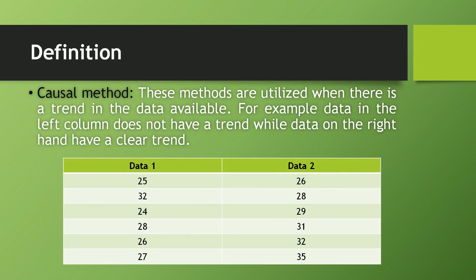Definition. These methods are utilized when there is a trend in the data available. For example, suppose we have data in the left column and data in the right column. If you can see the data in the left column which is 25, 22, 24, 28, 26, 27, you will be able to understand that there is no trend in this data.